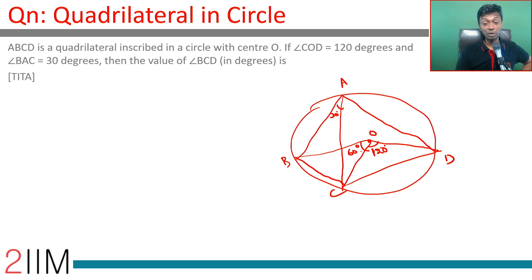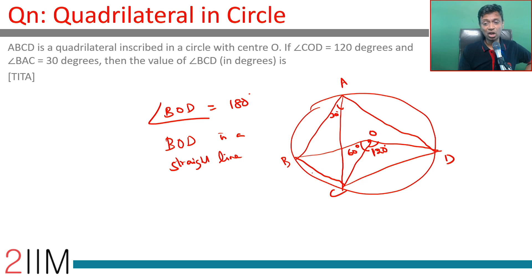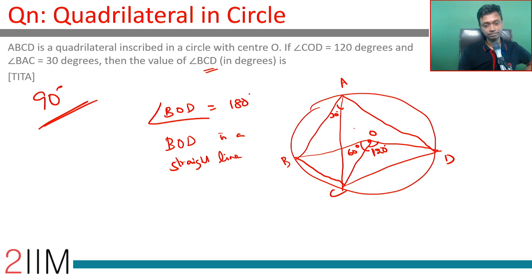Think about angle BOD — it is 60 plus 120, which is 180 degrees. So BOD is a straight line, meaning BD is a diameter of the circle. Therefore, angle BCD is an angle in a semicircle, which is 90 degrees.